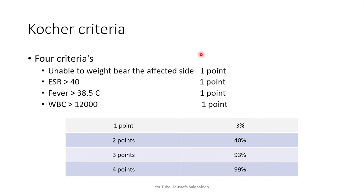The Kocher criteria helps in the diagnosis of septic arthritis. There are four criteria, each worth one point: inability to weight-bear on the affected side, erythrocyte sedimentation rate more than 40, fever more than 38.5°C, and white blood cell count more than 12,000. One point gives a 3% probability of septic arthritis; two points gives 40%; three points gives 93%; and four points gives 99%.